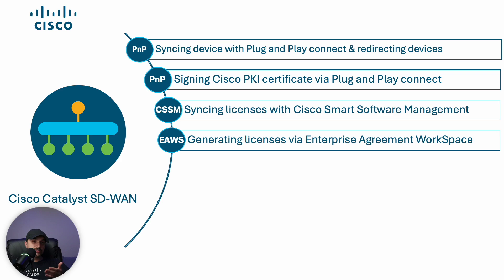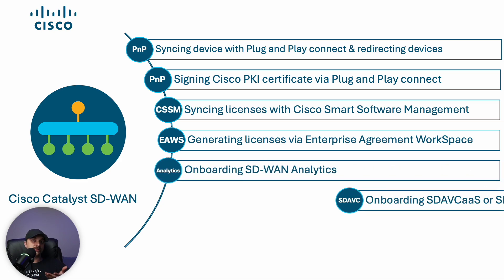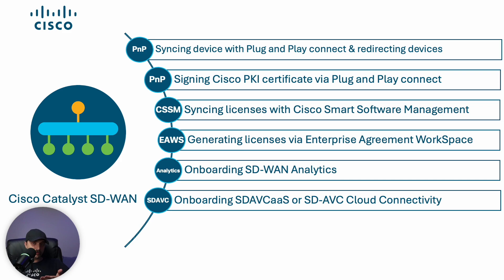Beyond day zero operations and integration with other Cisco applications, Catalyst SD-WAN Manager uses smart account and virtual account credentials to onboard various SaaS-based services for network configuration and monitoring, such as Catalyst Analytics and SDAVC. This onboarding process is done by enabling cloud services via smart account and virtual account credentials — when you log in to SD-WAN Manager for the first time, or through the Catalyst Manager settings page if you want to enable them later.